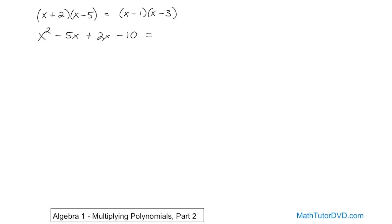And on the right hand side, you're going to do the same thing. x times x gives you x squared. And then x times negative three is going to give you negative three x. And then negative one times x.